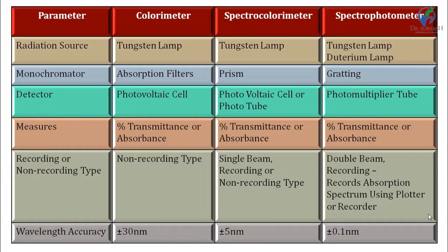Now we will see the basic differences between these three instruments. The four basic components are: radiation source, filter or monochromator, sample holder, and detector. In colorimeter and spectro-colorimeter, tungsten lamp is used as radiation source. In spectrophotometer, two sources are used: tungsten lamp and deuterium lamp. For the monochromator, colorimeters use absorption filters, spectro-colorimeters use a prism, and spectrophotometers use a grating. Efficiency increases in the order: filters, then prism, then grating.